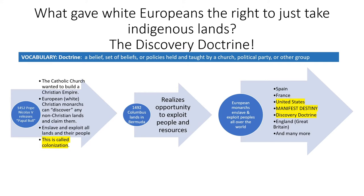In 1492, when Columbus lands in Bermuda and sees the people and the resources, he realizes the opportunity to exploit the people and resources in the Americas. When the news gets back to Europe, European monarchies flock to the Americas to claim land and people for their own — Spain, France, Great Britain, and other countries as well. Later, after the United States is formed, they continue this practice, except they call it Manifest Destiny.